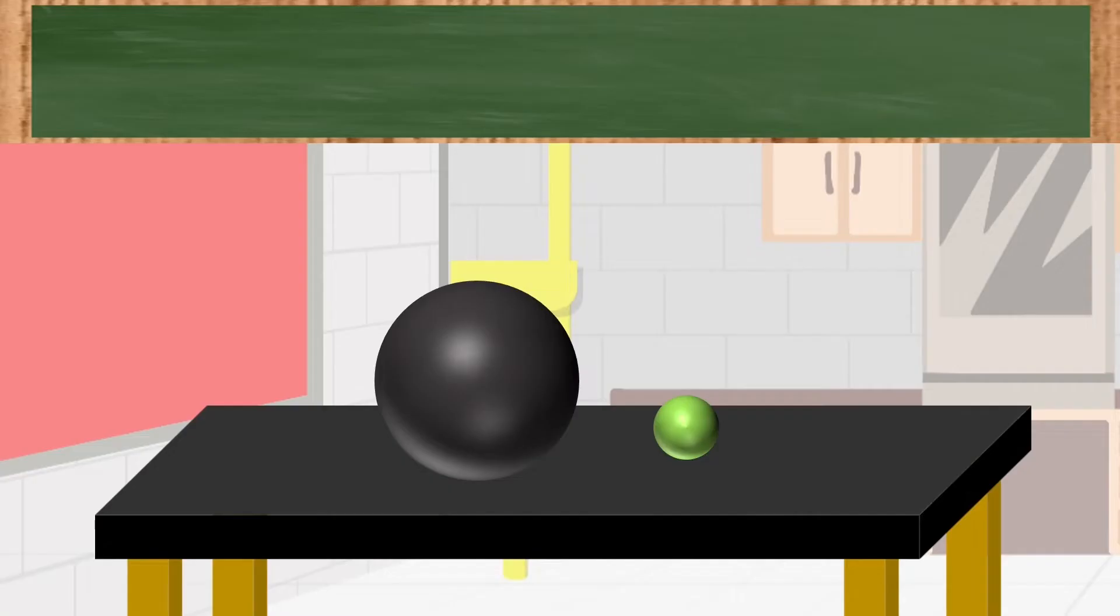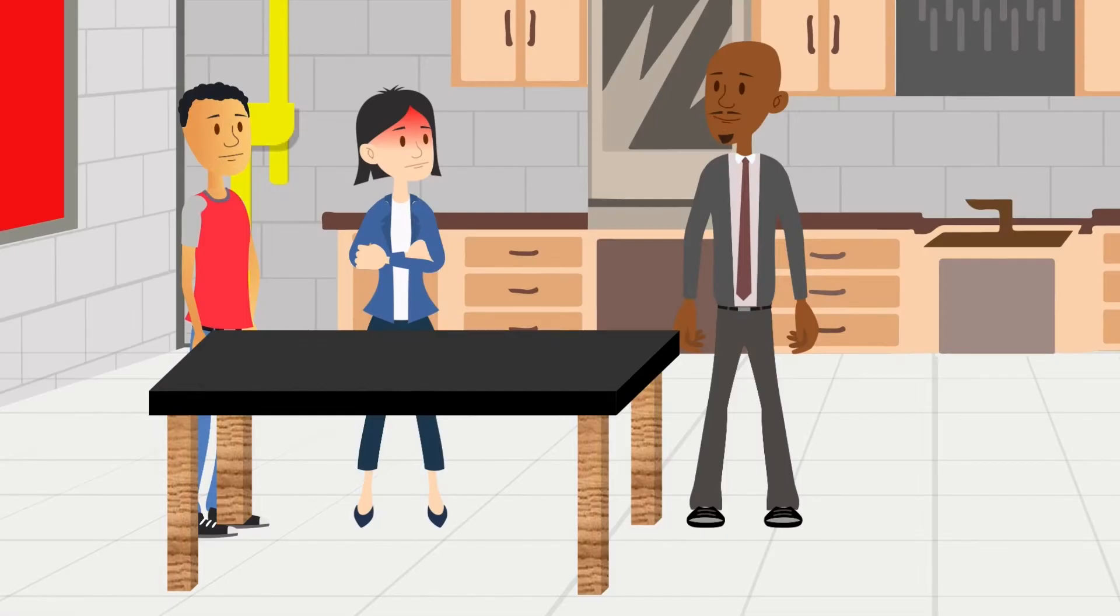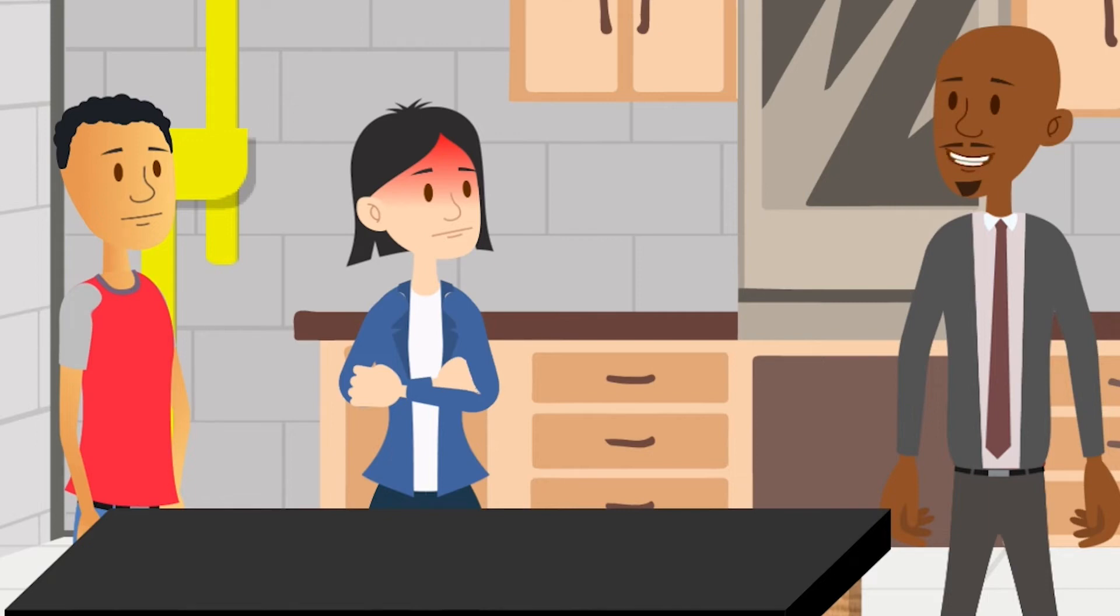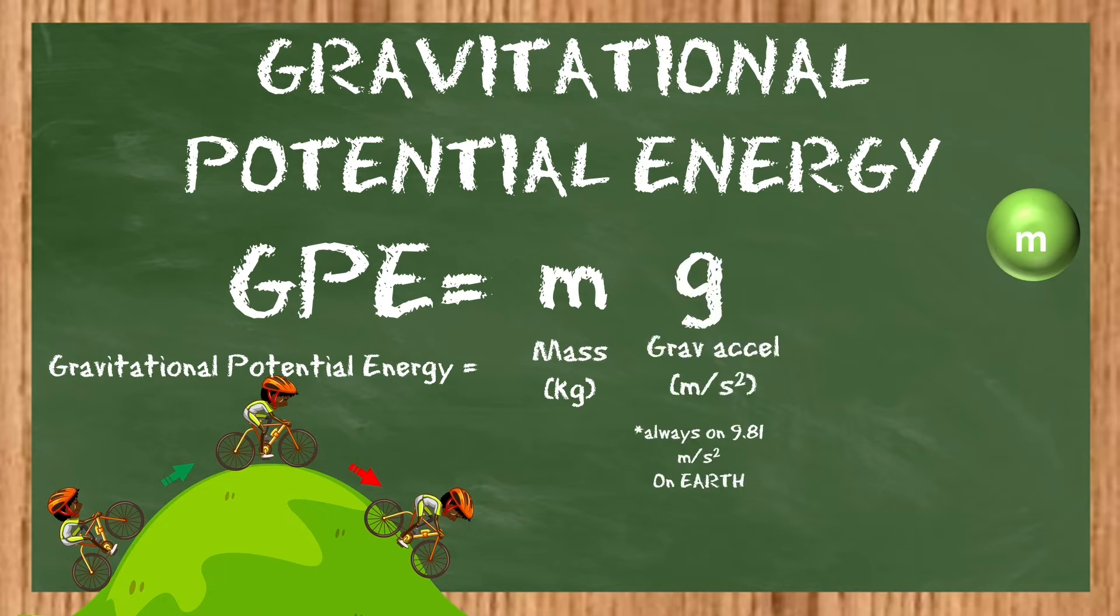Let's try this one. Which ball has the highest ability to do work if it were dropped? The bowling ball, right? Right. Well, what about now? Oh, the Earth. Why the Earth? The Earth has more gravity, exactly. Gravitational potential energy can be calculated by taking the mass of the object, multiplying it by gravitational acceleration, and multiplying it by its height, because these are the three things that affect gravitational potential energy.